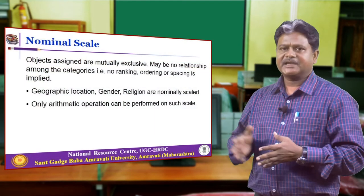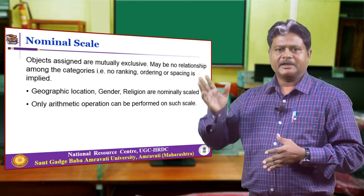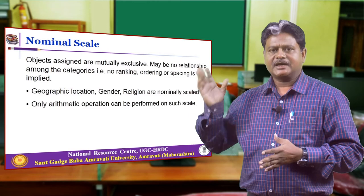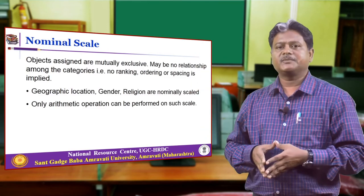Now we will also look at measurement scales and their properties, which are used for attitude measurement. Based on the properties of the measurement scale, we have different categorizations: nominal scale, ordinal scale, interval scale, and ratio scale. We will start with the nominal scale.